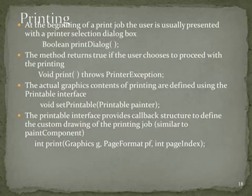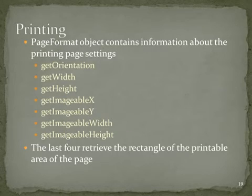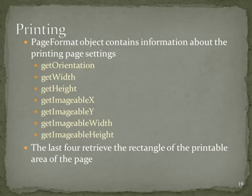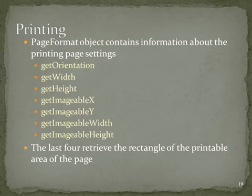The Printable interface provides a callback structure to define custom drawing for printing jobs, similar to paintComponent. The method signature is: int print(Graphics g, PageFormat pf, int pageIndex). The implementation of this method is very similar to paintComponent, and code can often be shared between the two methods. The Graphics parameter, which can be cast to a Graphics2D object, provides access to the 2D rendering engine. All drawing, transformations, and other features are available for printing. The pageIndex parameter provides the page number of the page currently being rendered.